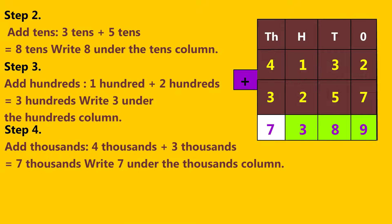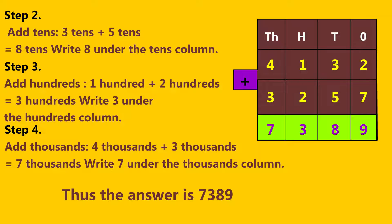Step 4: Add thousands. Four thousands plus three thousands is equal to seven thousands. Write seven under the thousands column. Thus the answer is 7,389.